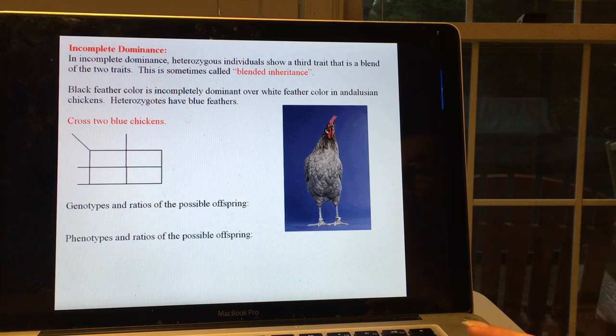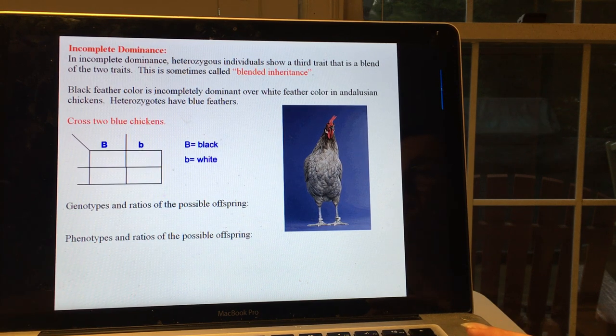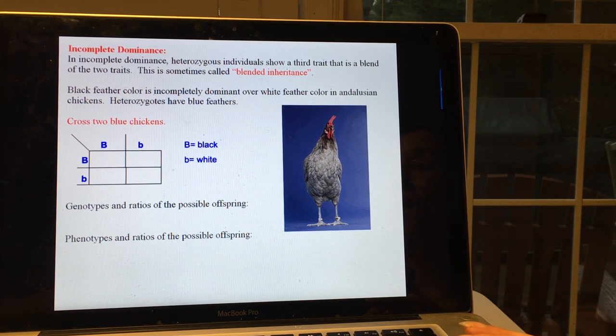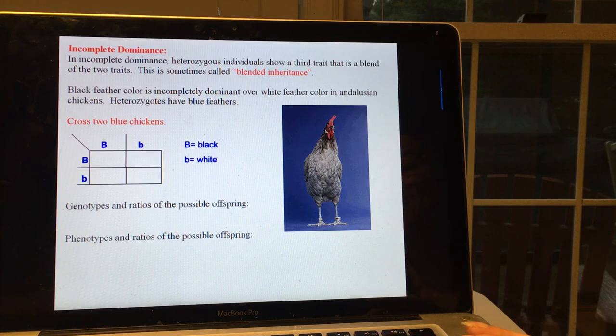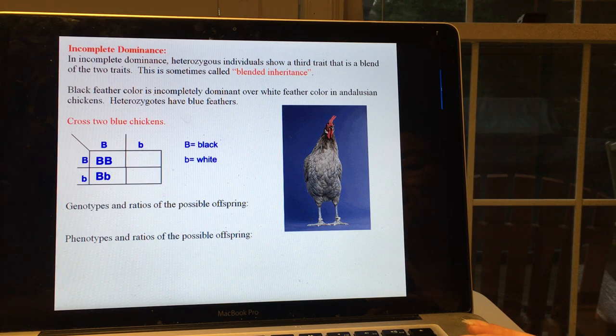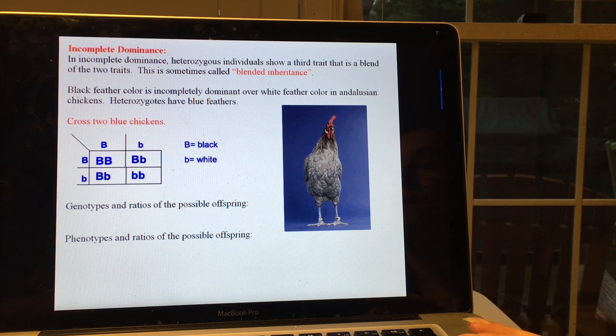So if we cross two blue Andalusian chickens, that means both of them are heterozygous. Then when we cross those, the offspring can either be big B big B, big B little B, or little B little B.